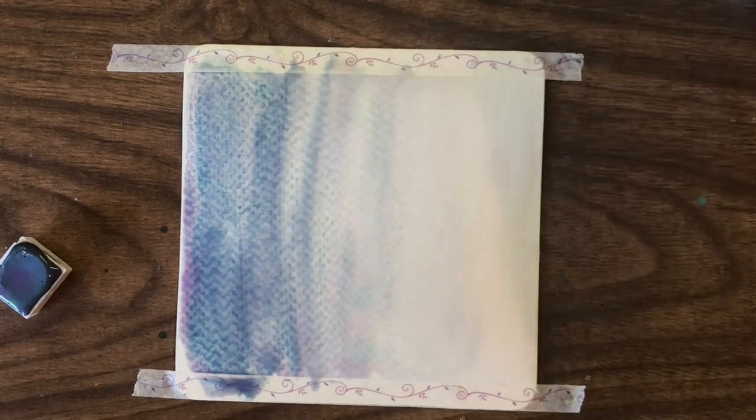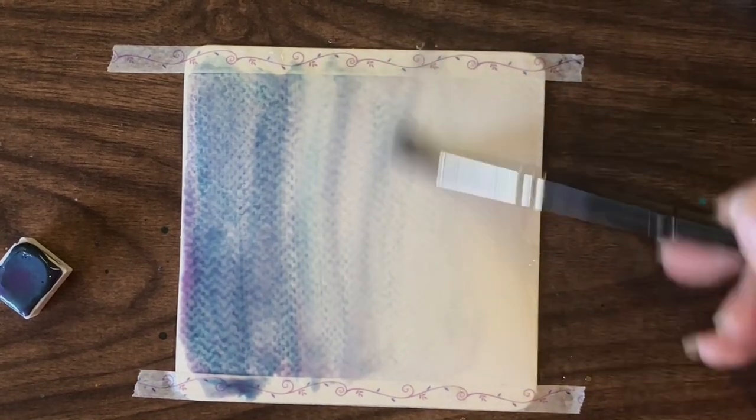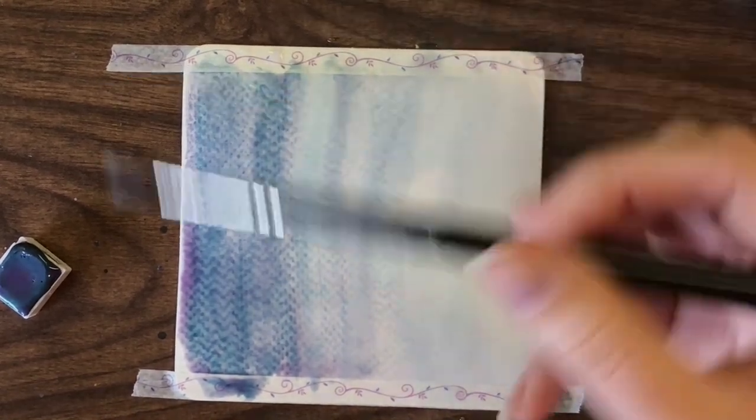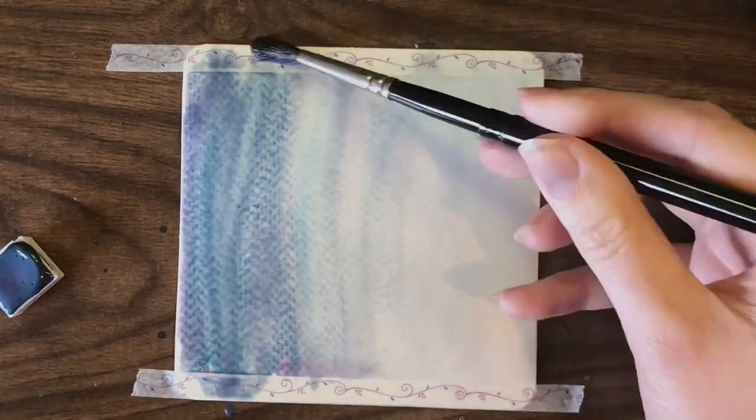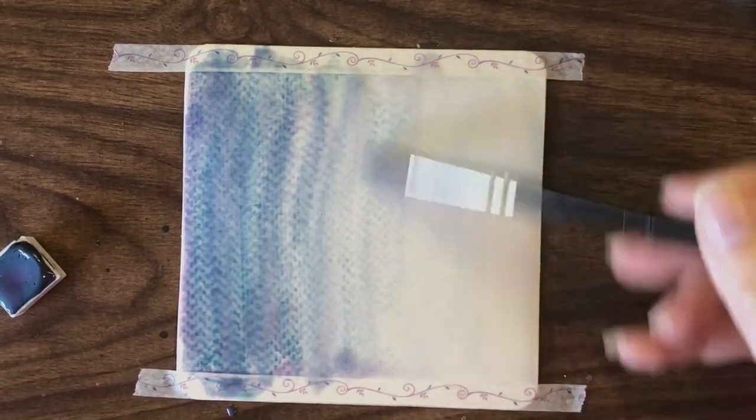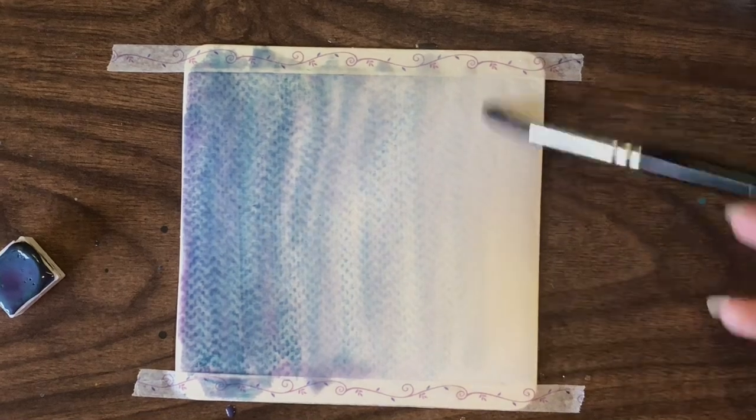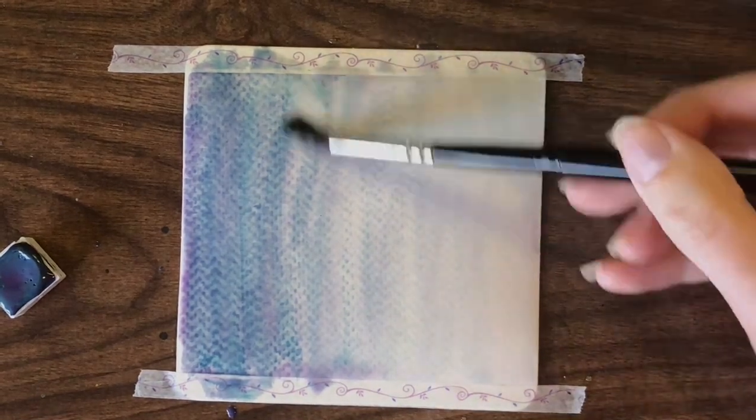Much like with the other ones, I am swatching it out wet on wet to try and get a flat wash. I find it quite difficult to get a flat wash on this paper, but I do like how the texture of this paper grabs the paint. So I am going to continue to do the swatches on this paper.